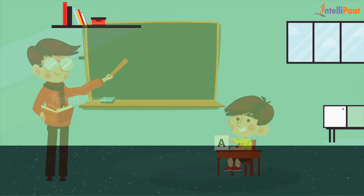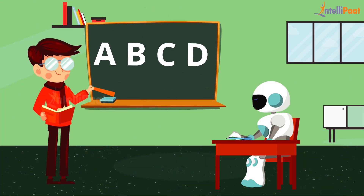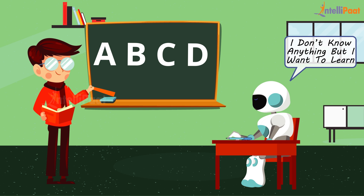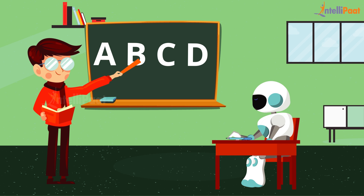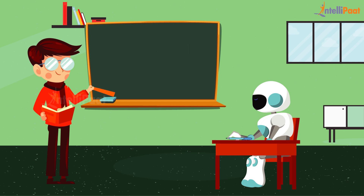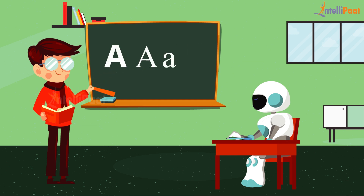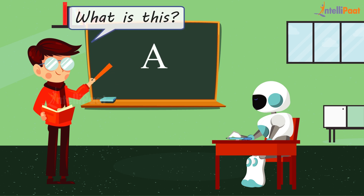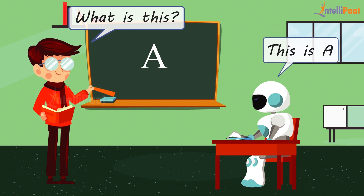Now we'll apply the same analogy to a machine. Initially we have a machine which knows absolutely nothing. The machine has no idea what A or B is, so we start by showing it various pictures of the letter A and teaching it that it's A. Once the training is complete, we test the machine by showing it the letter A in different fonts and styles, and if the machine is able to identify the letters accurately, it means the machine was trained well.